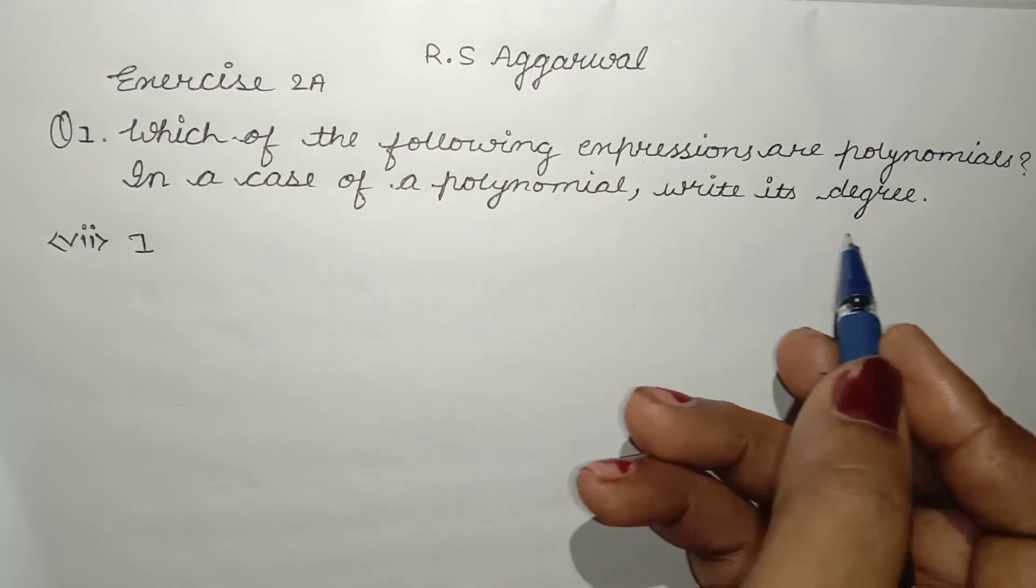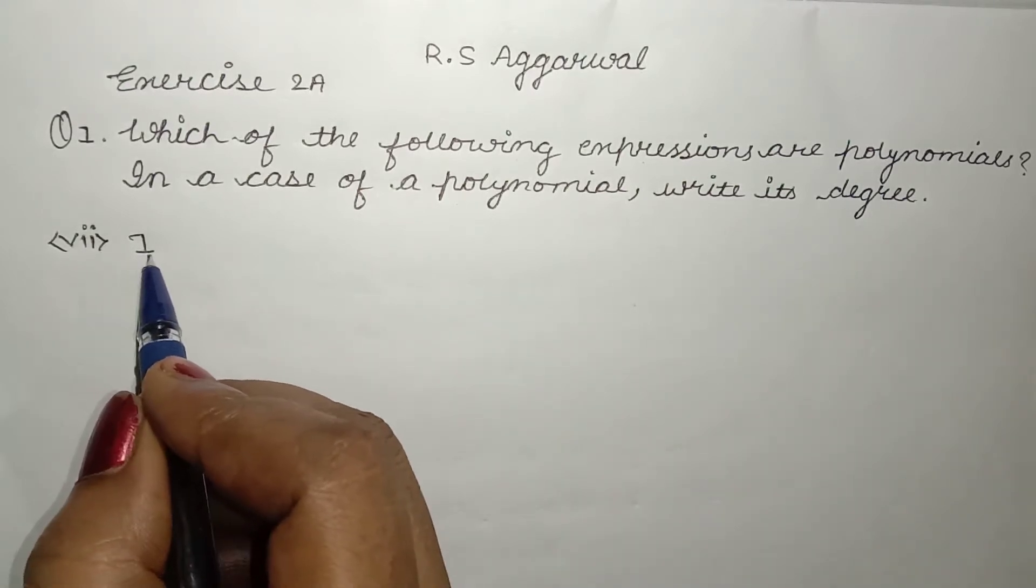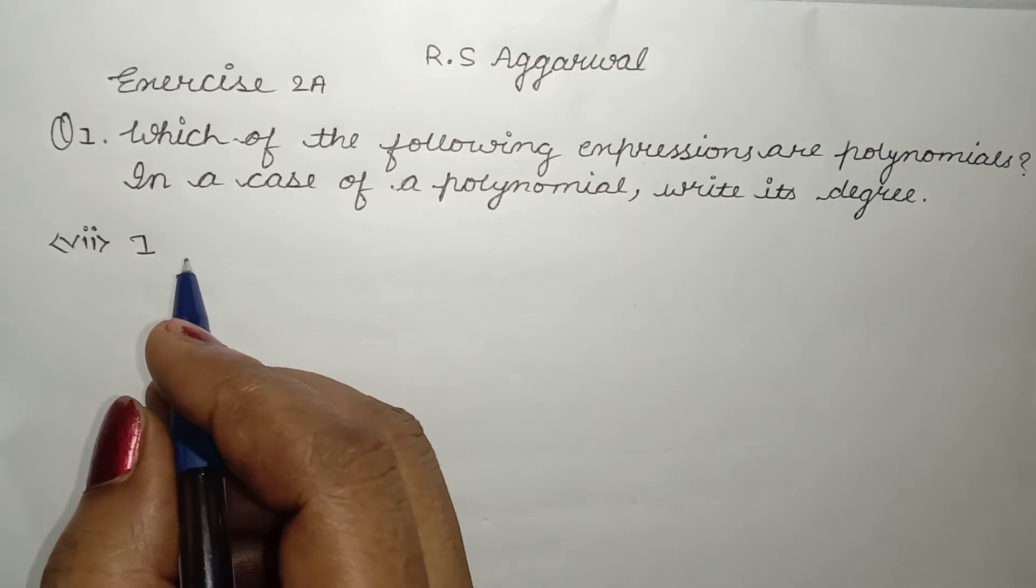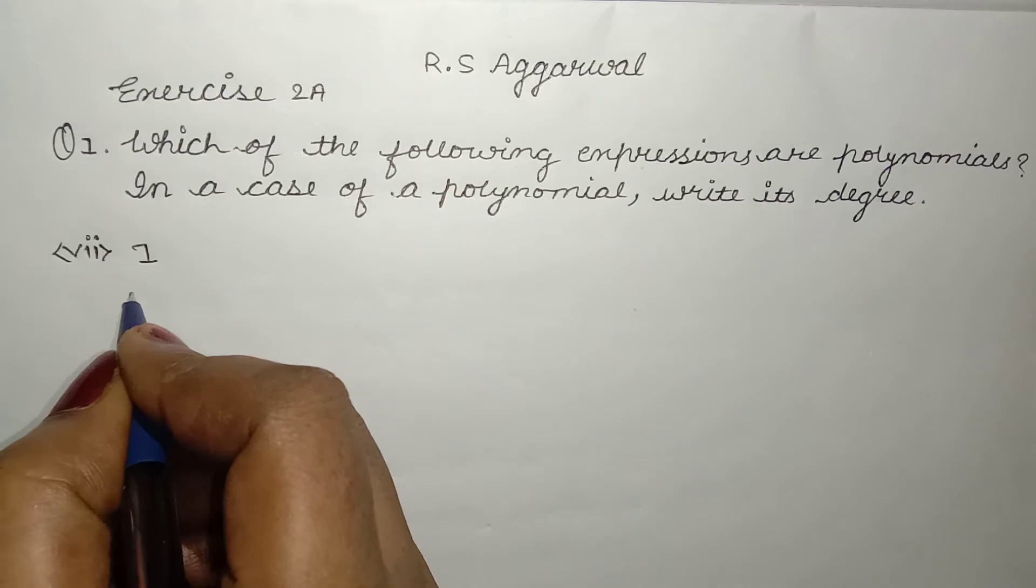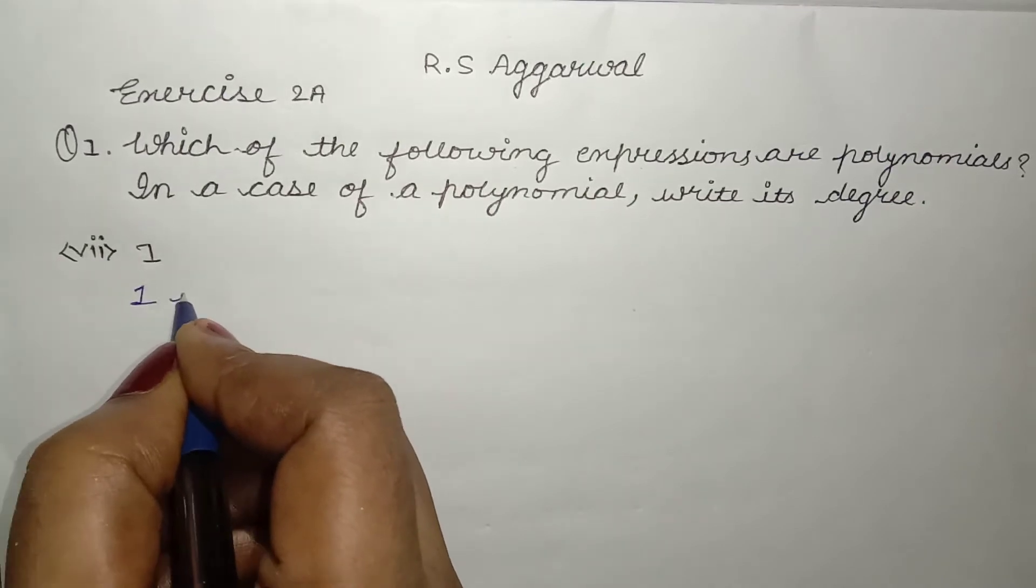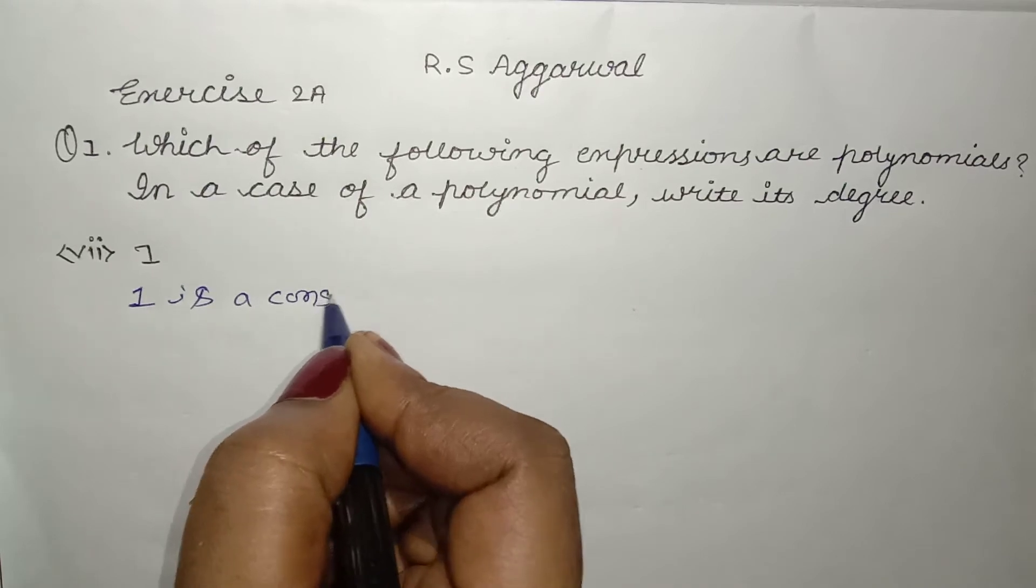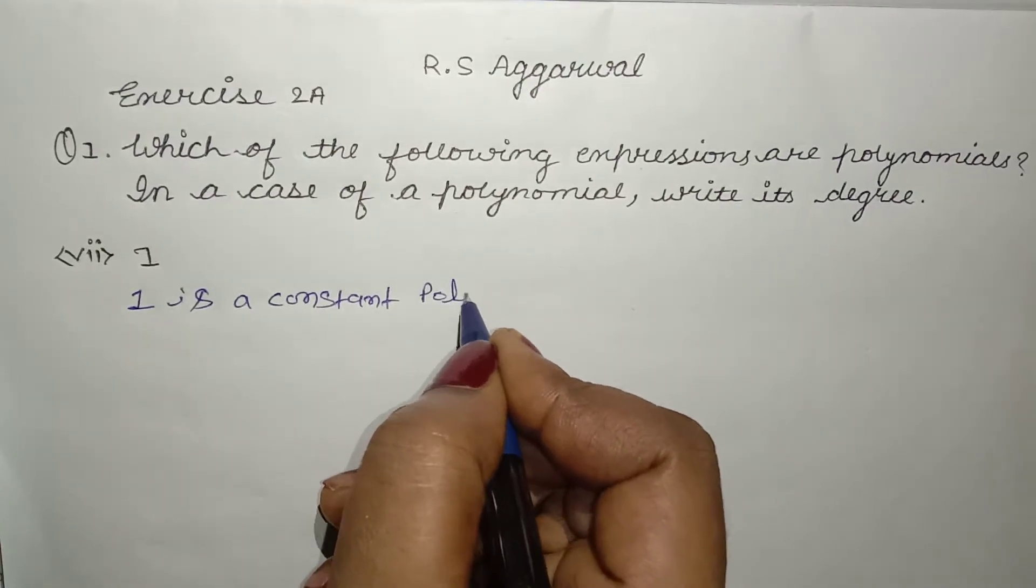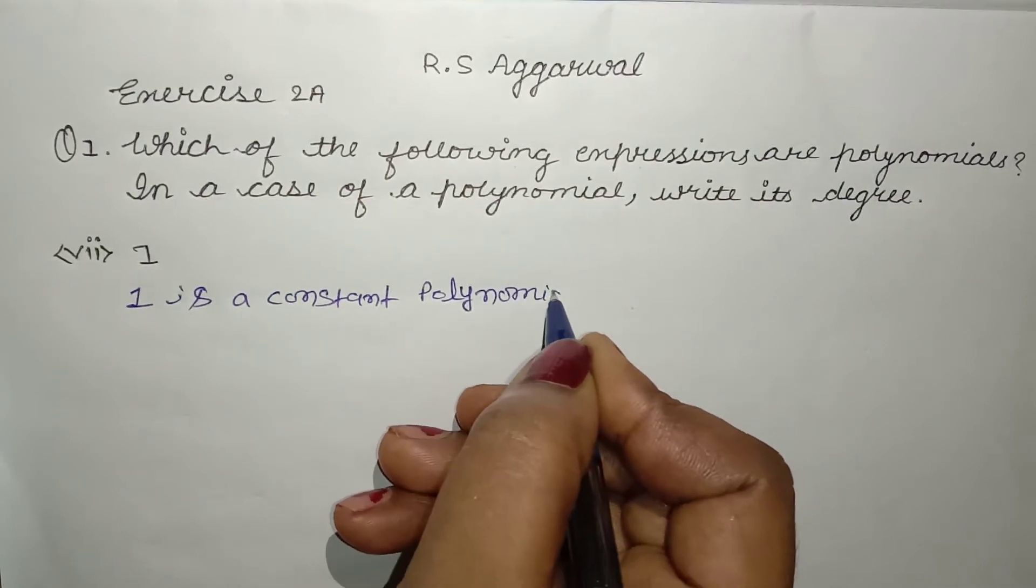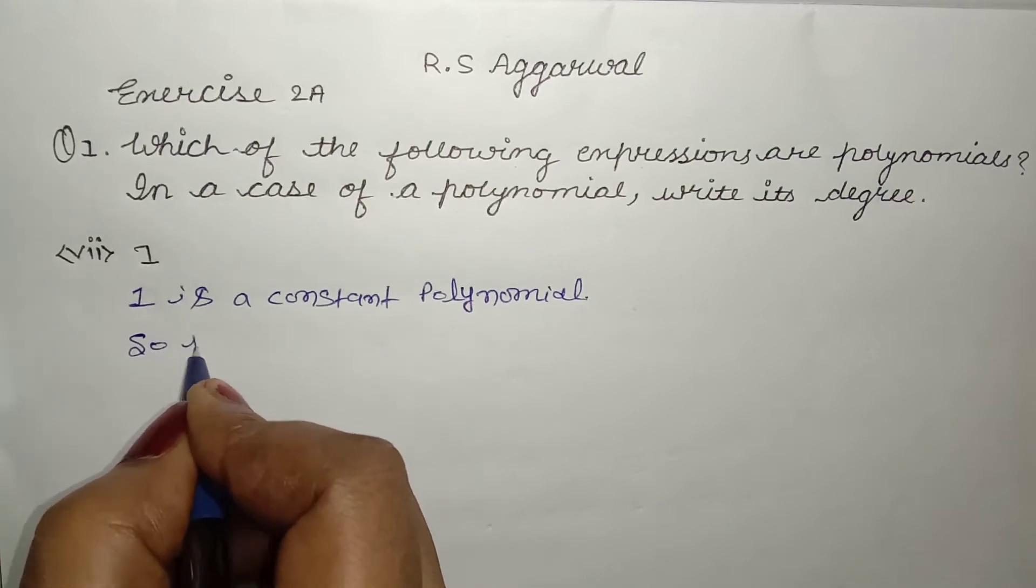1 is a constant polynomial, so its degree is 0.